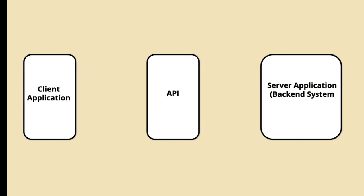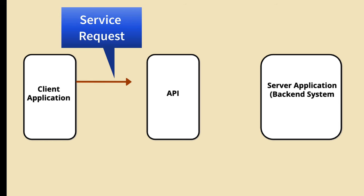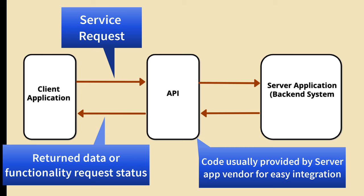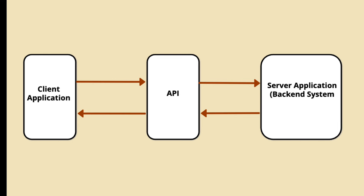APIs act as intermediaries, facilitating seamless communication between software components or systems. When an application requests an API, it sends a specific set of parameters or data to the API, which processes the request and returns the desired response. The response can be data, functionality, or a combination. However, the increased adoption of APIs has also brought about security concerns. Here are some common API security vulnerabilities and related attacks.